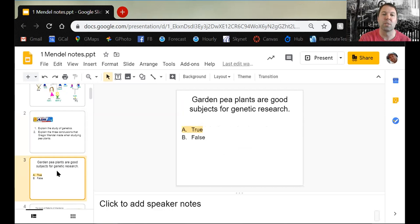Garden pea plants are good subjects for genetic research. What do you think? The correct answer would be true. The reason is they grow quickly. They have a lot of simple dominant recessive traits that you could figure out the patterns of inheritance. That's exactly what Mendel did. He grew lots of them. He could control which peas bred with which peas, and was able to figure out which genes were dominant, which were recessive.